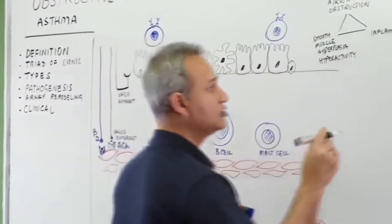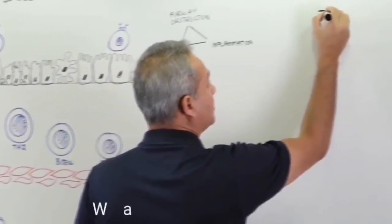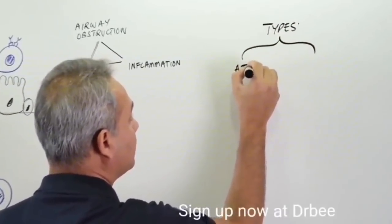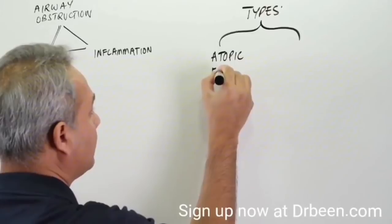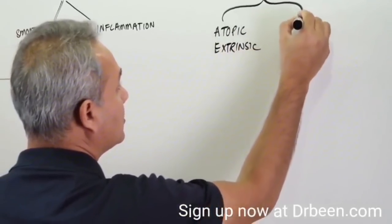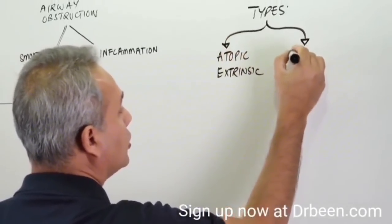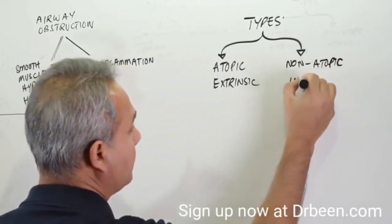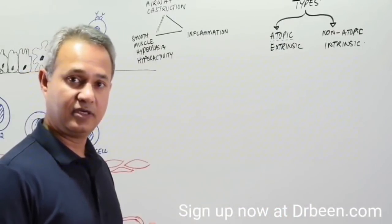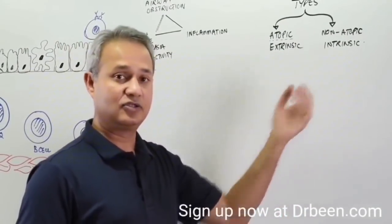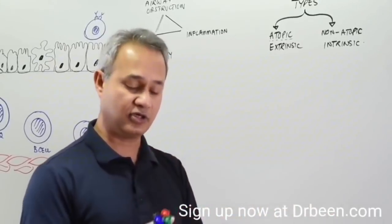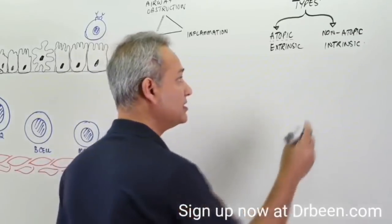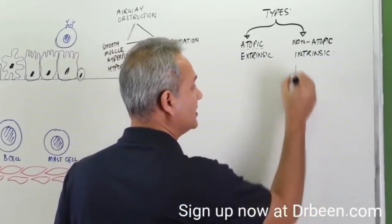Asthma is of two primary types. The two types I am going to write here are atopic or extrinsic, and non-atopic or intrinsic. Now, non-atopic asthma is an asthma which is not allergenic. So there is nothing from outside that is causing it. There is something inside that is causing the problem. Normally, it is a smaller set of people that has this problem, and what happens is there are multiple causes that can cause this.